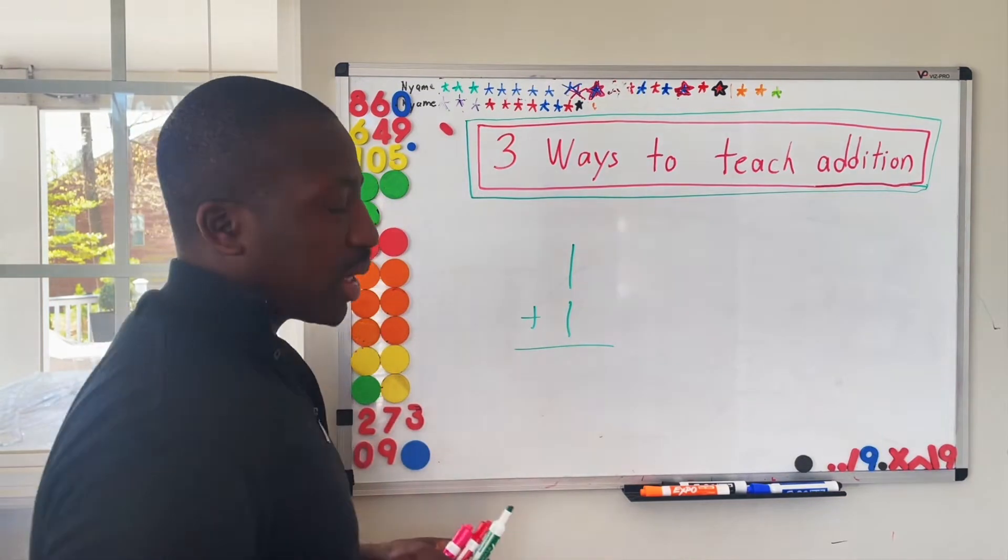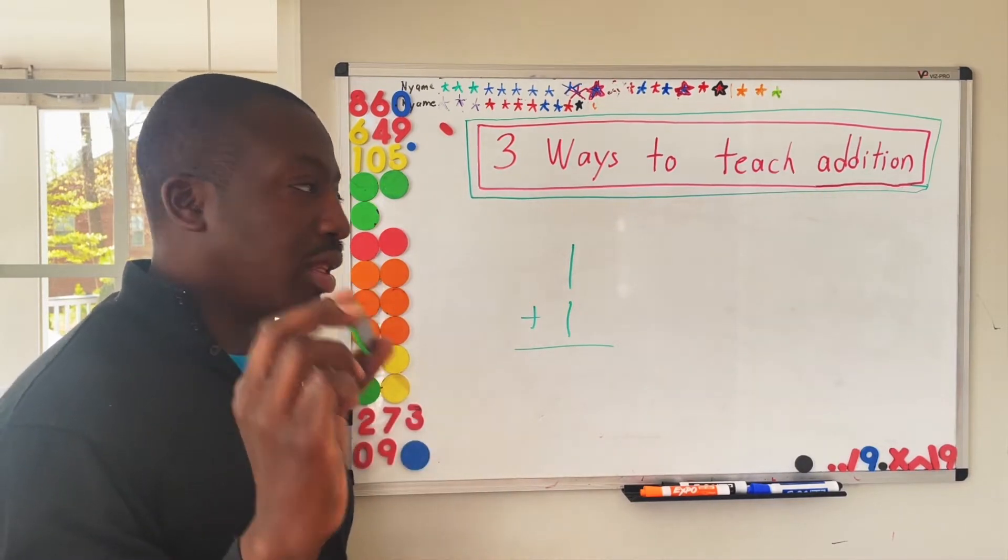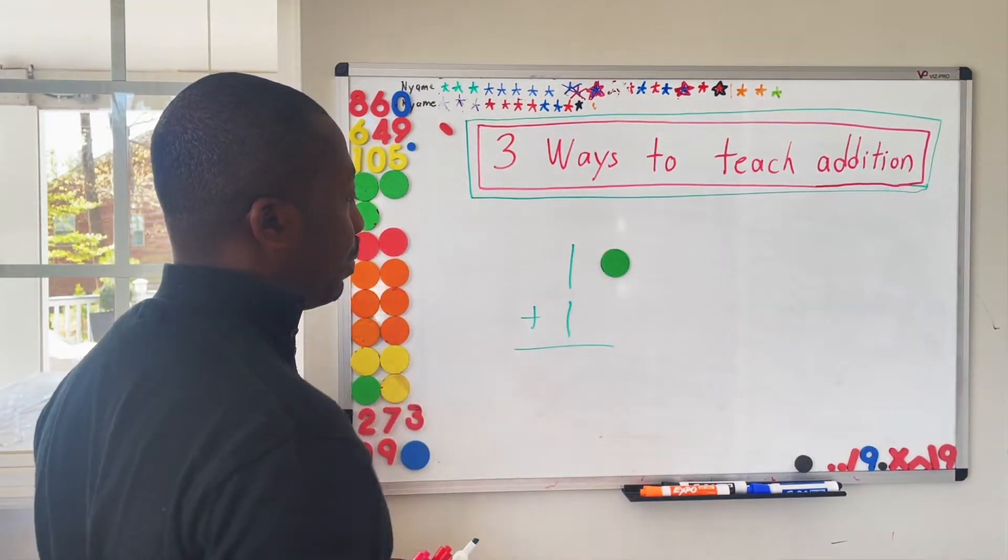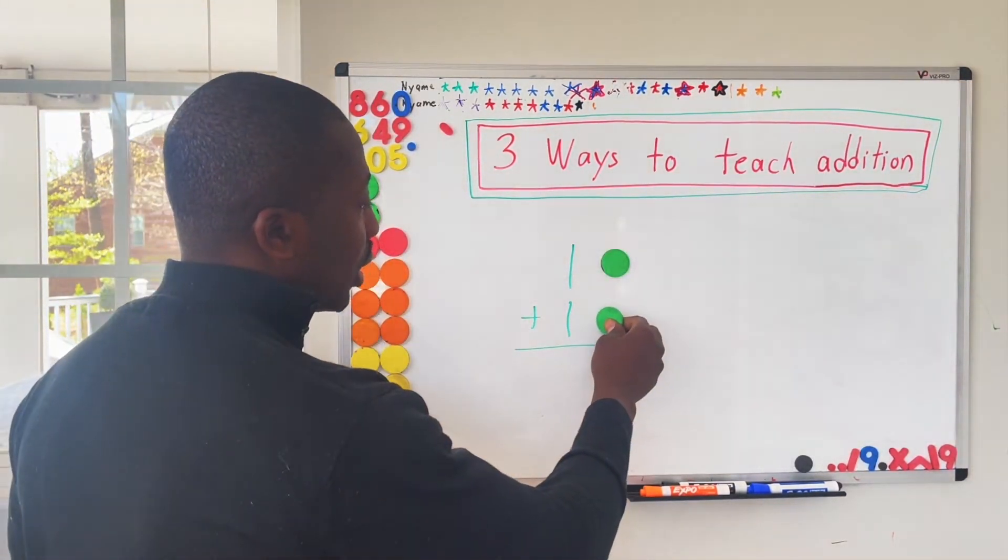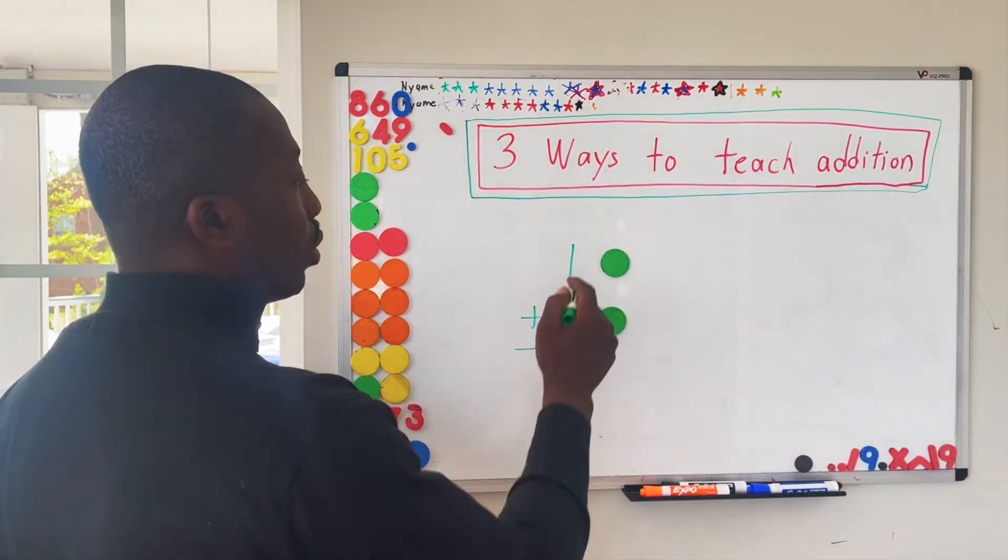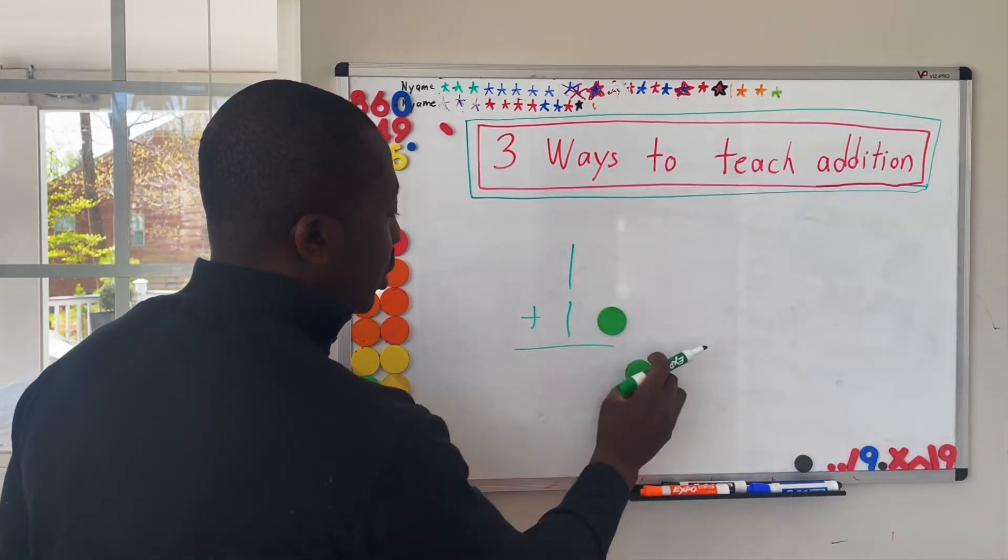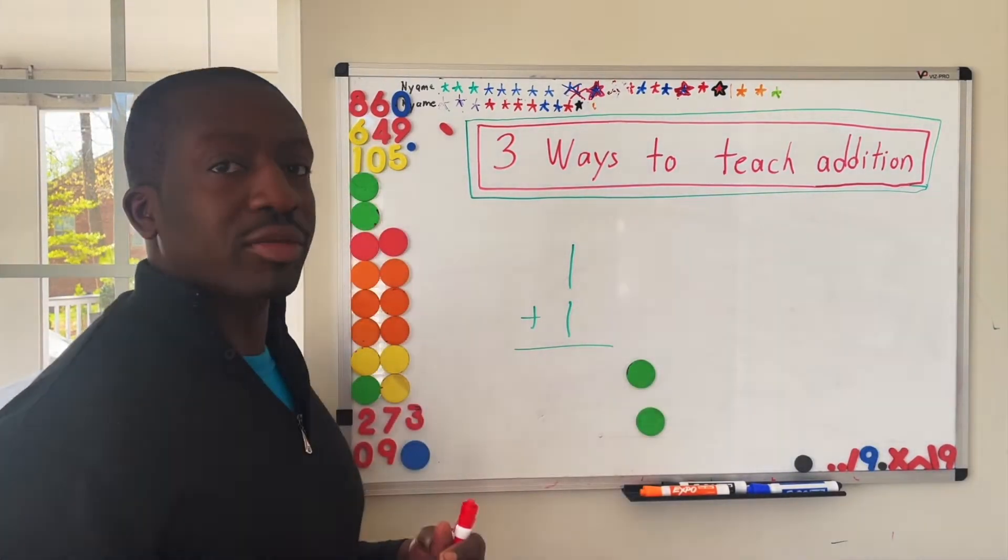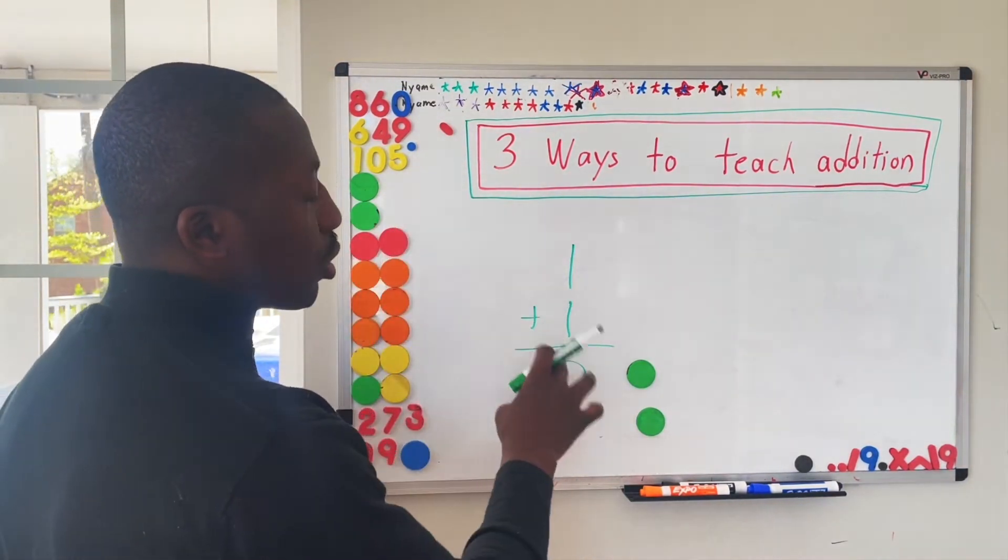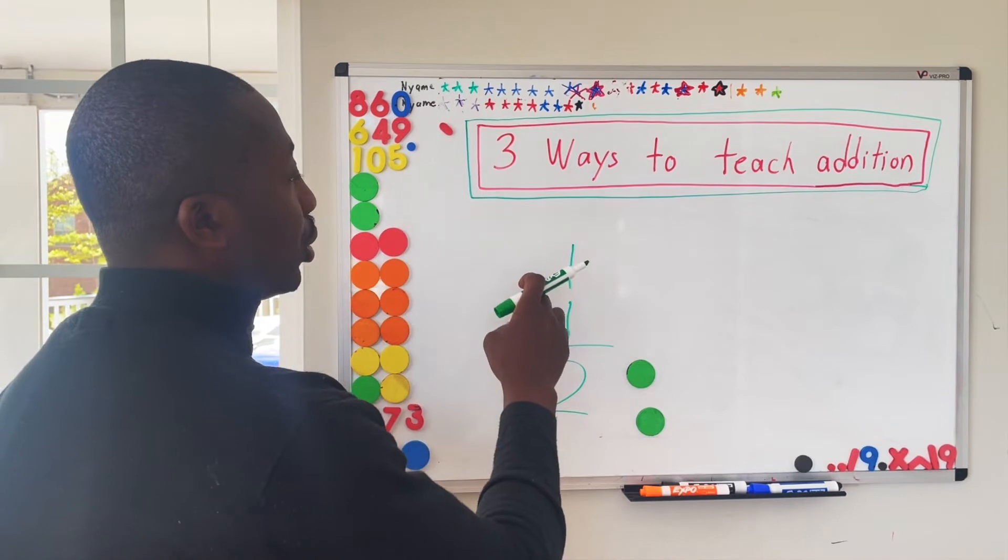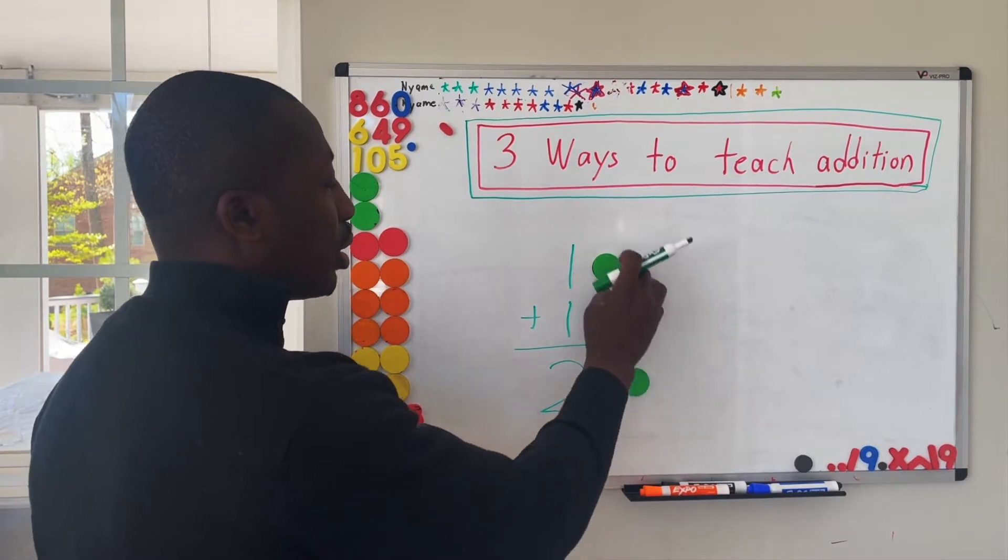So in the number correspondence method, a child gets a problem, say one plus one. A child has to correspond the number one with one object. Then realize that there's a separate number here that also corresponds to a different number of objects. Then count the two of them, one, two, and then either be able to show that it equals the same number of objects, two, or if they're capable of writing, write that. So this is the number correspondence method.